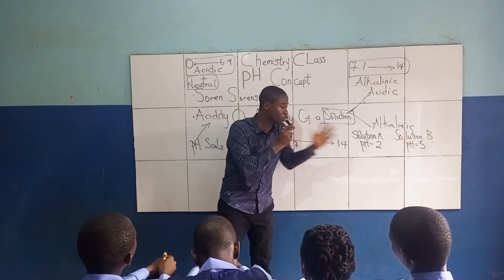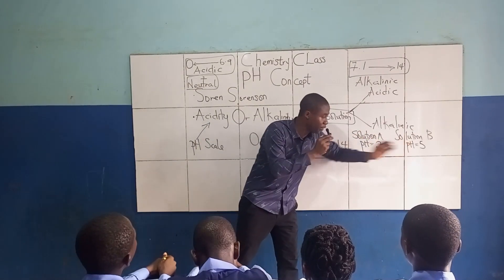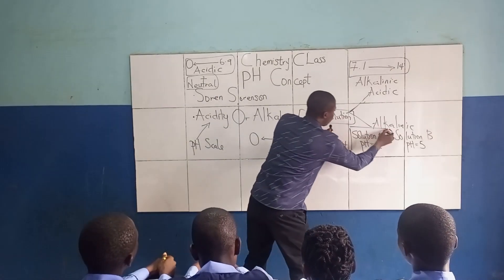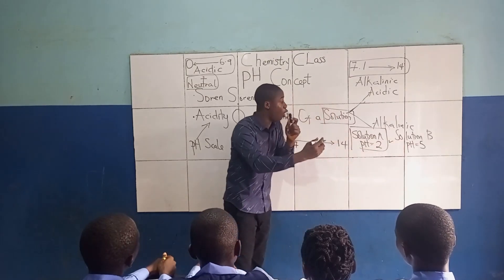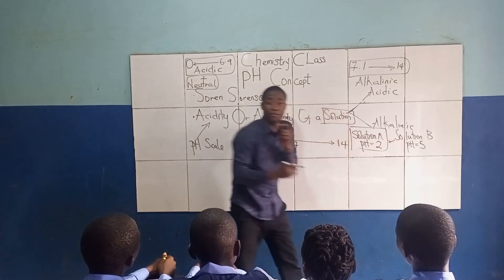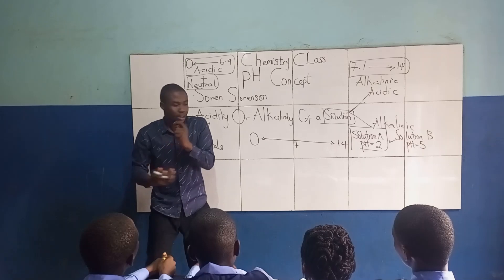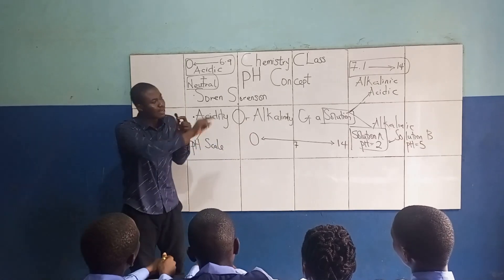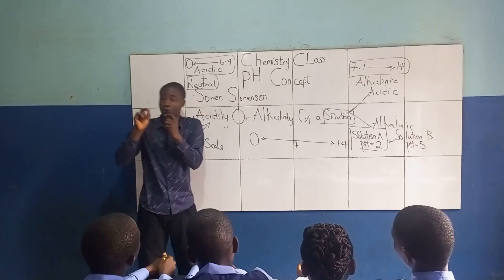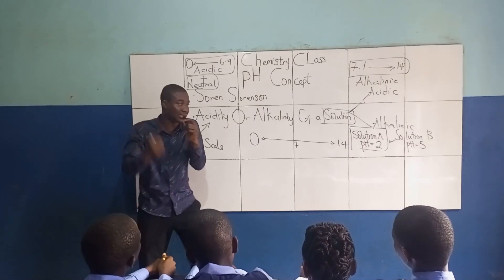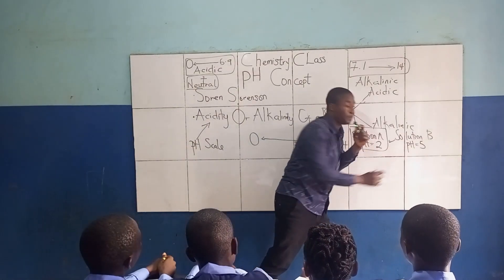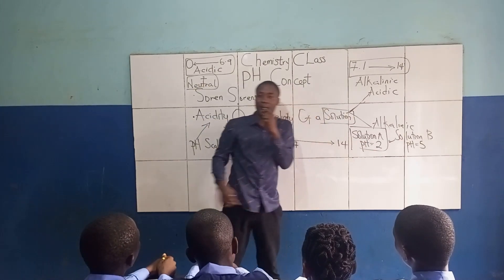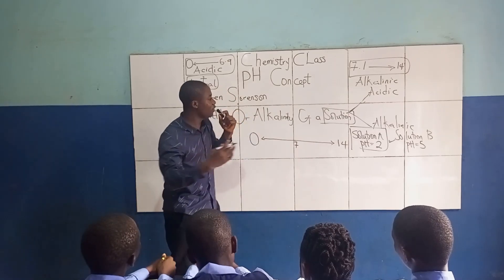Between Solution A (pH 2) and Solution B (pH 5), which is closer to zero? That's Solution A with pH 2. So Solution A is more acidic than Solution B. Both are acidic, but Solution A is more acidic.